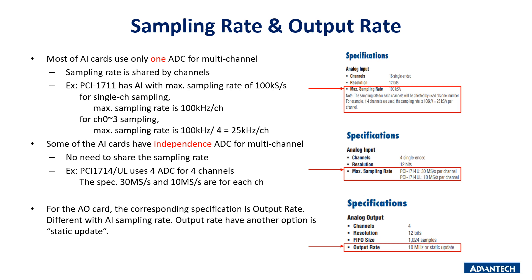Corresponding to the analog input sampling rate, high-speed analog output devices have a FIFO design, which supports a high output rate — for example, the PCIe-1816 output rate. Some analog output cards are not designed for high-speed control and instead use software polling to output data; their datasheet will show 'static update'.